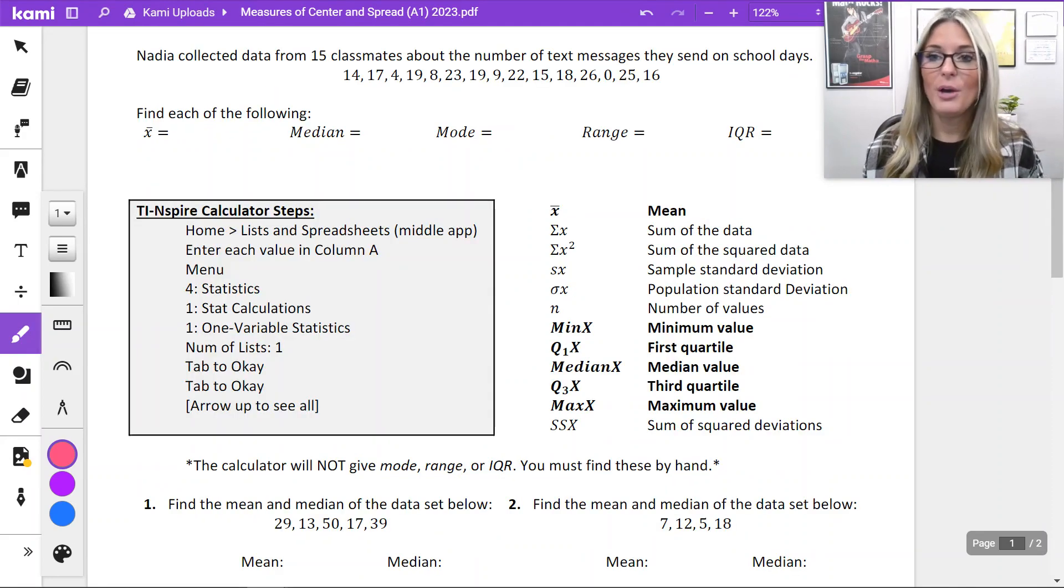For the example below, we're going to use the calculator. I'm going to show you how the calculator can produce some of these statistical values for you. Nadia collected data from 15 classmates about the number of text messages that they send on school days. We're going to find the mean, this symbol here represents mean, median, mode, range, and IQR using the calculator.